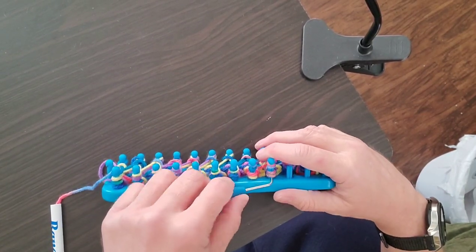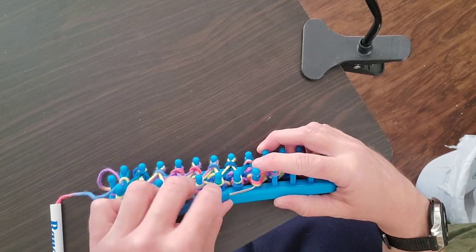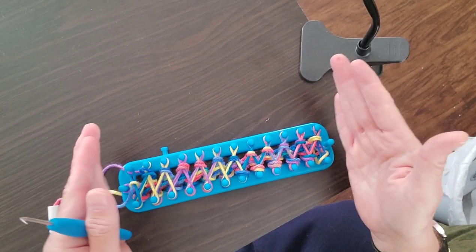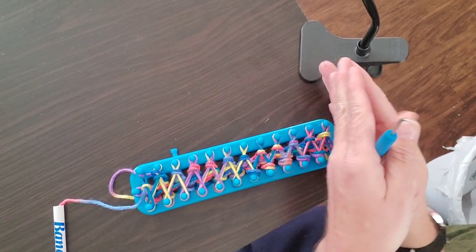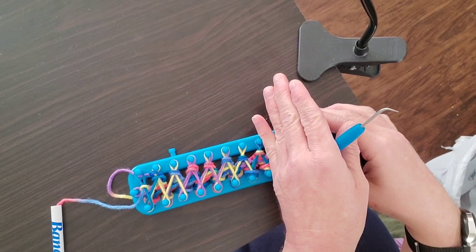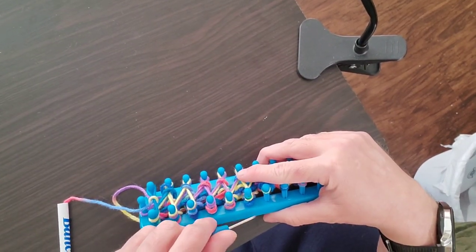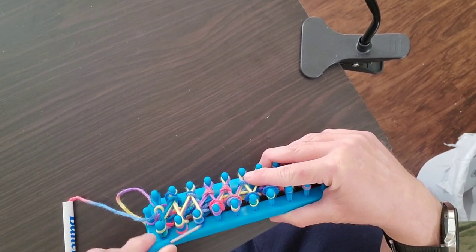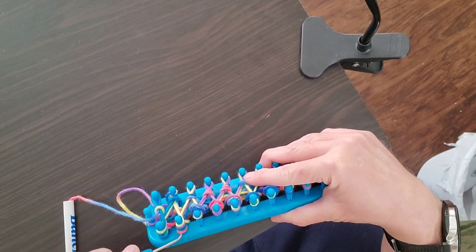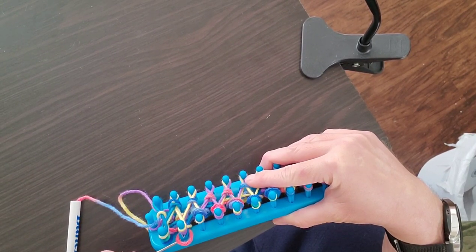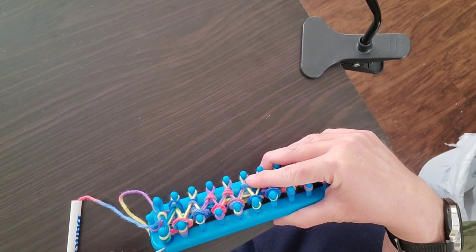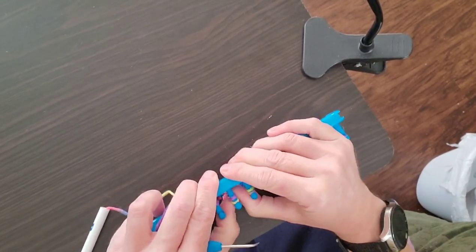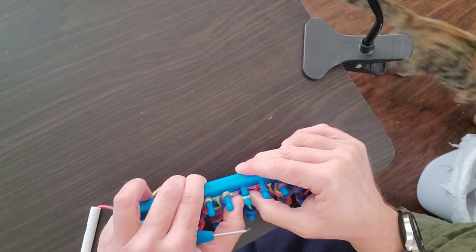But it's real easy to adjust the thickness or the width of it. If I didn't want my scarf to be this wide, I would just adjust however many pegs I wanted. It's real easy on the looms to adjust to make things exactly the project how you want it to be. And at this point, I'm just going to be doing this over and over again until I get the scarf the length that I wanted. So when I am ready to bind off, I'll check back in with you guys.